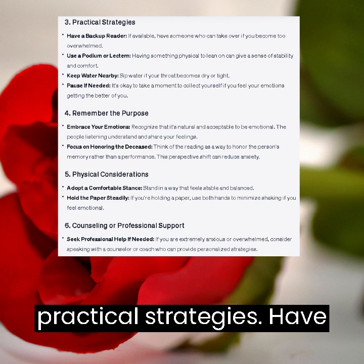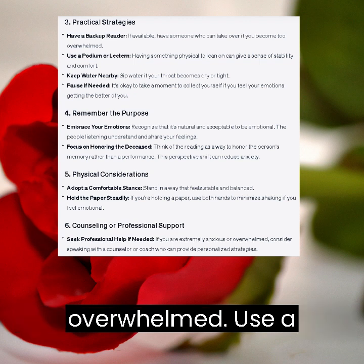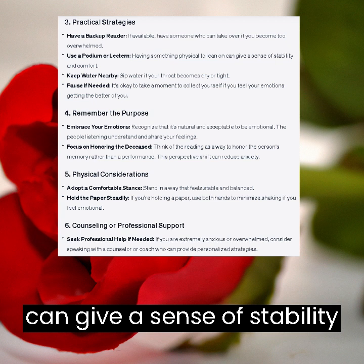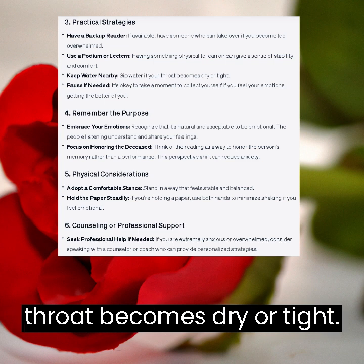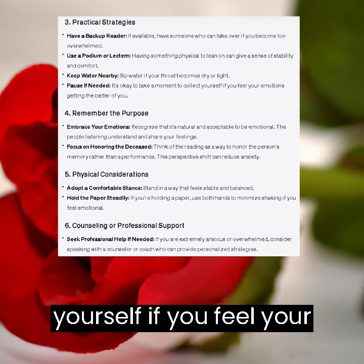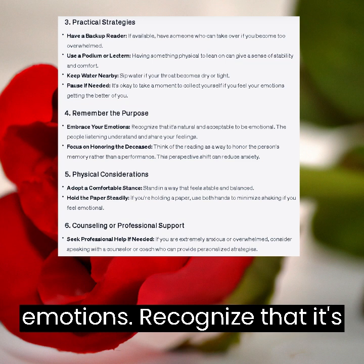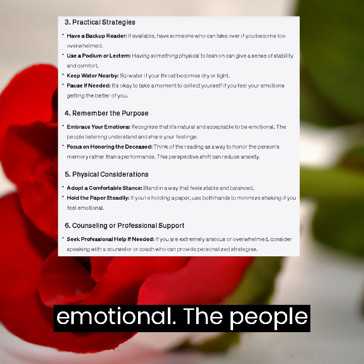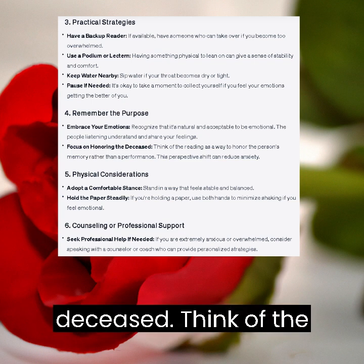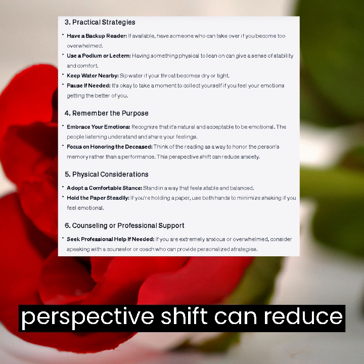3. Practical Strategies. Have a backup reader – if available, have someone who can take over if you become too overwhelmed. Use a podium or lectern: having something physical to lean on can give a sense of stability and comfort. Keep water nearby – sip water if your throat becomes dry or tight. Pause if needed – it's okay to take a moment to collect yourself if you feel your emotions getting the better of you. 4. Remember the Purpose. Embrace your emotions: recognize that it's natural and acceptable to be emotional. The people listening understand and share your feelings. Focus on honoring the deceased – think of the reading as a way to honor the person's memory rather than a performance. This perspective shift can reduce anxiety.